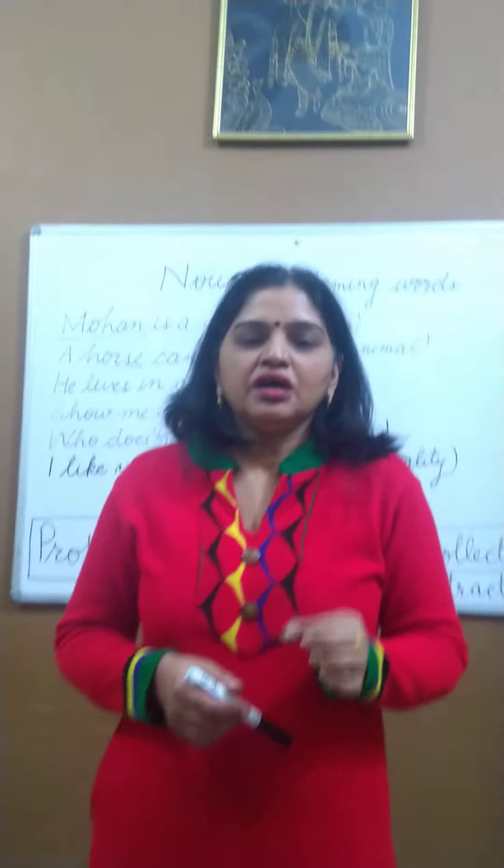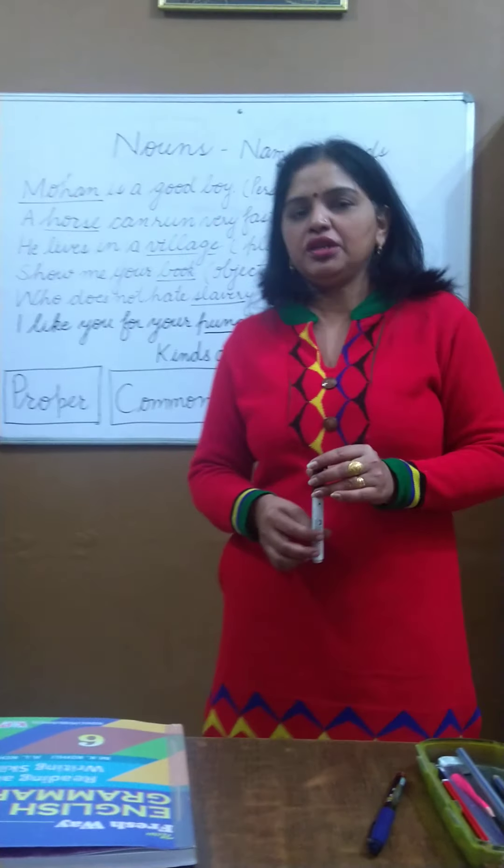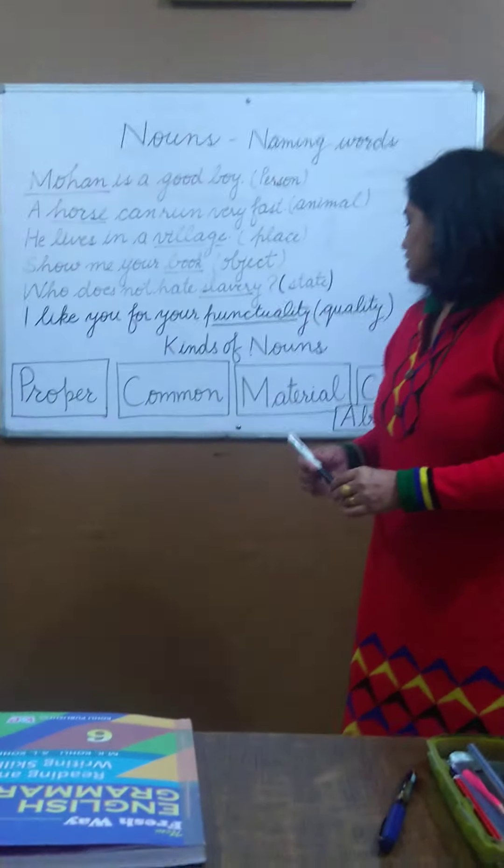So a proper noun is the name of a particular person, place, or thing. Now, a common noun is the name given to persons, places, or things of the same kind. For example, there are many students in a class — some are girls and some are boys. So girls and boys are common nouns. All animals — cow, dog — they are called animals. These things are called tables, markers. They are the common name for the same kind of things, so they are called common nouns.